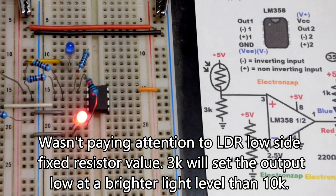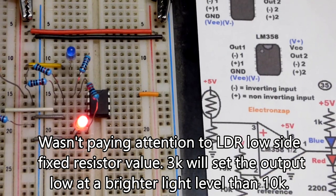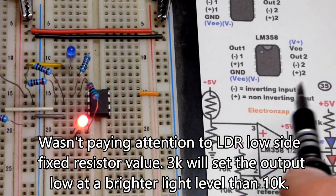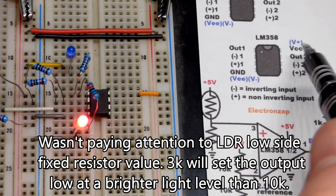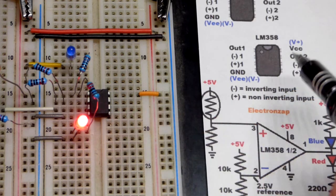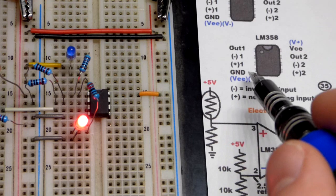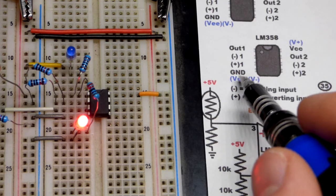I'll zoom in a little bit closer so we can see the pin layout again for this particular op-amp. Positive supply top right, bottom left could be ground or a negative supply if it's a split supply.